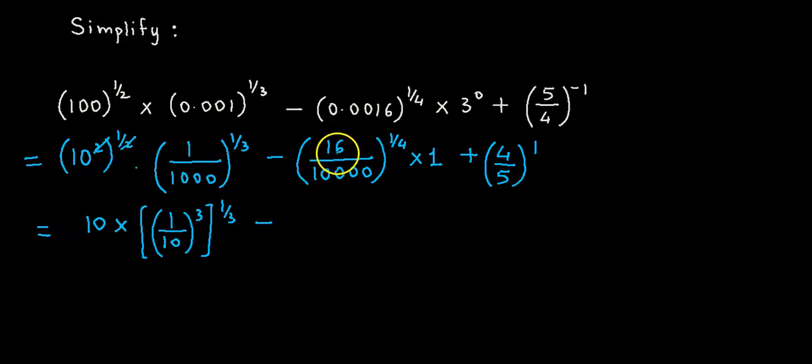Minus. Now 16 is 2 raised to 4, and 10000 is 10 raised to 4. So we could write this as 2 upon 10 the whole thing raised to 4 and further raised to 1 by 4, into 1 - so we simply skip that - plus 4 by 5.